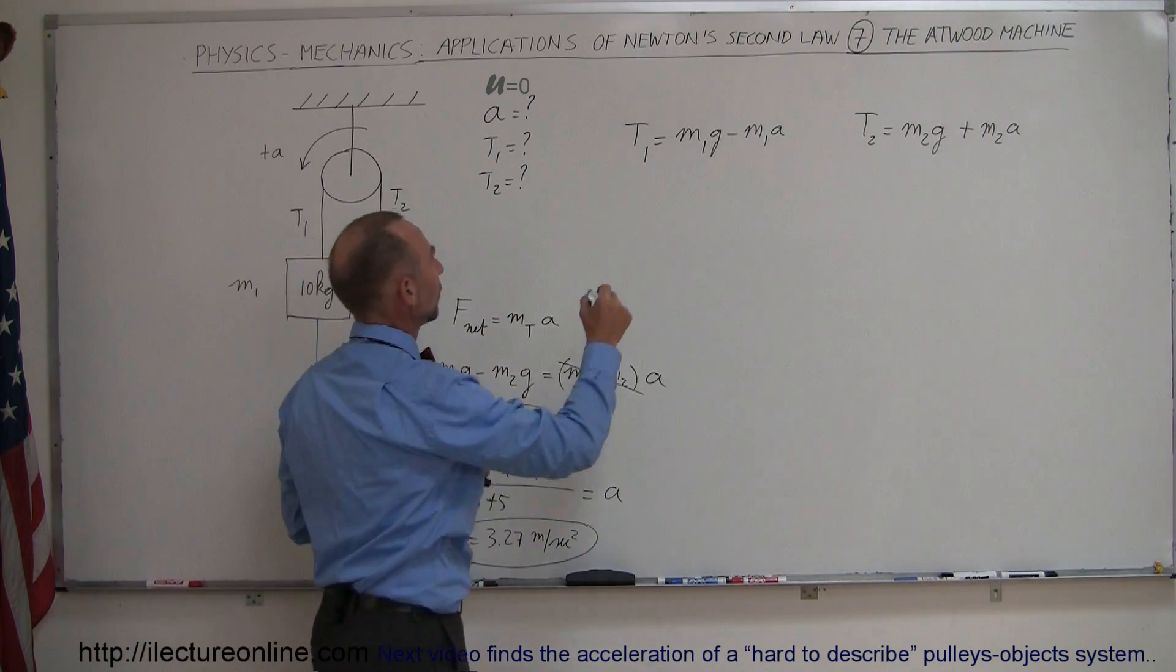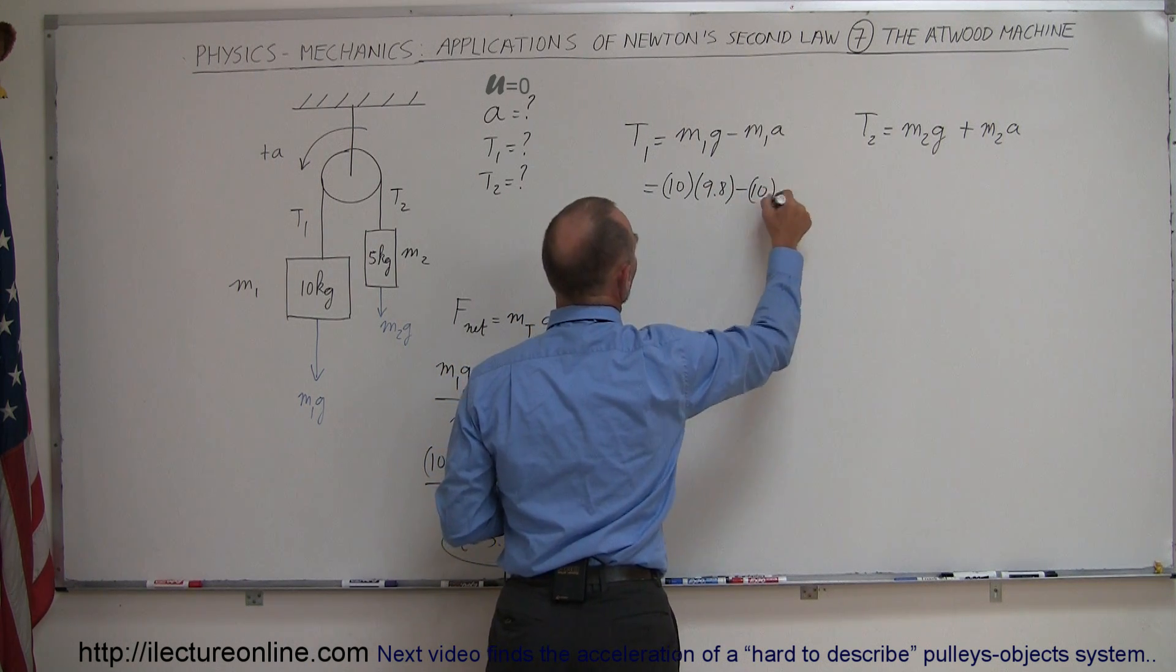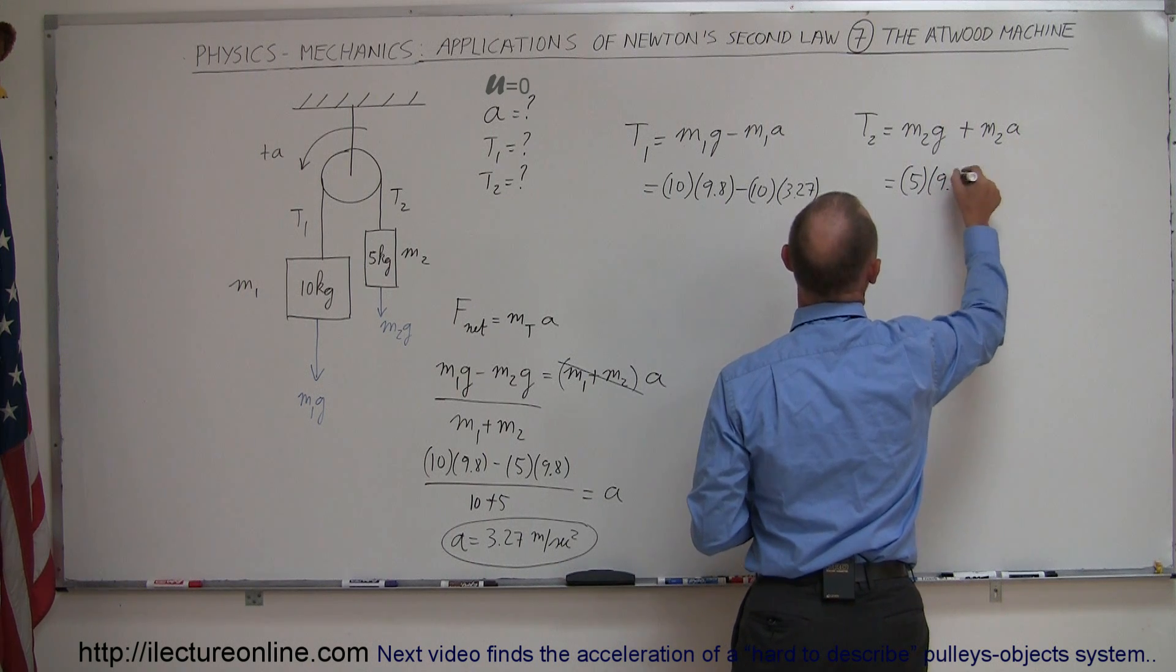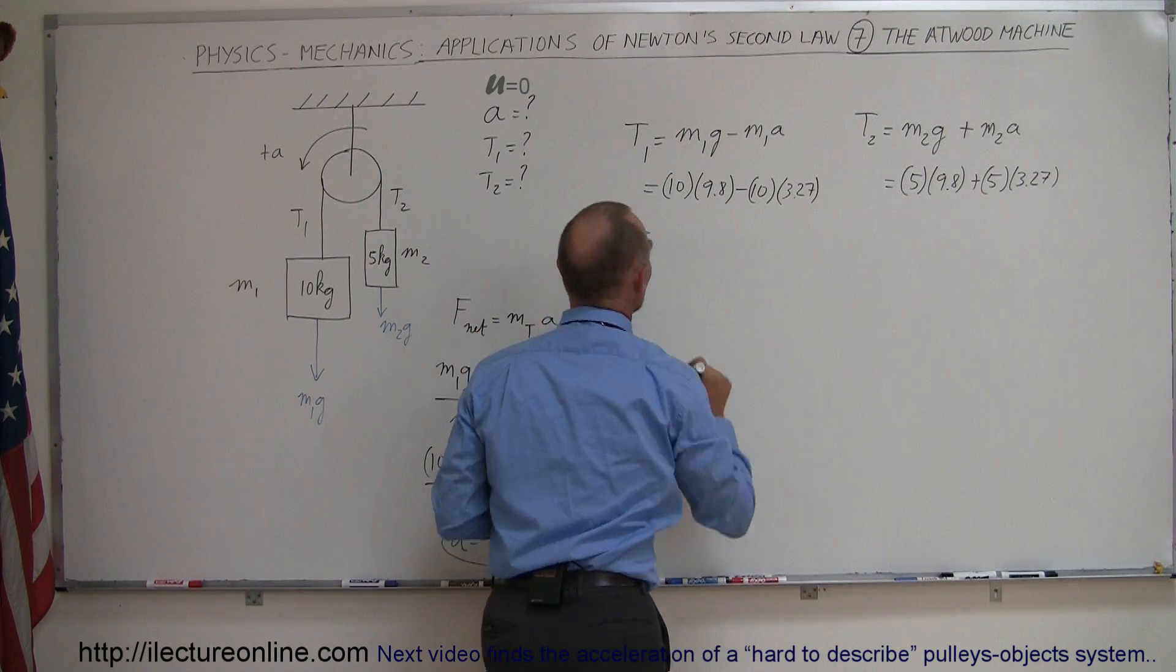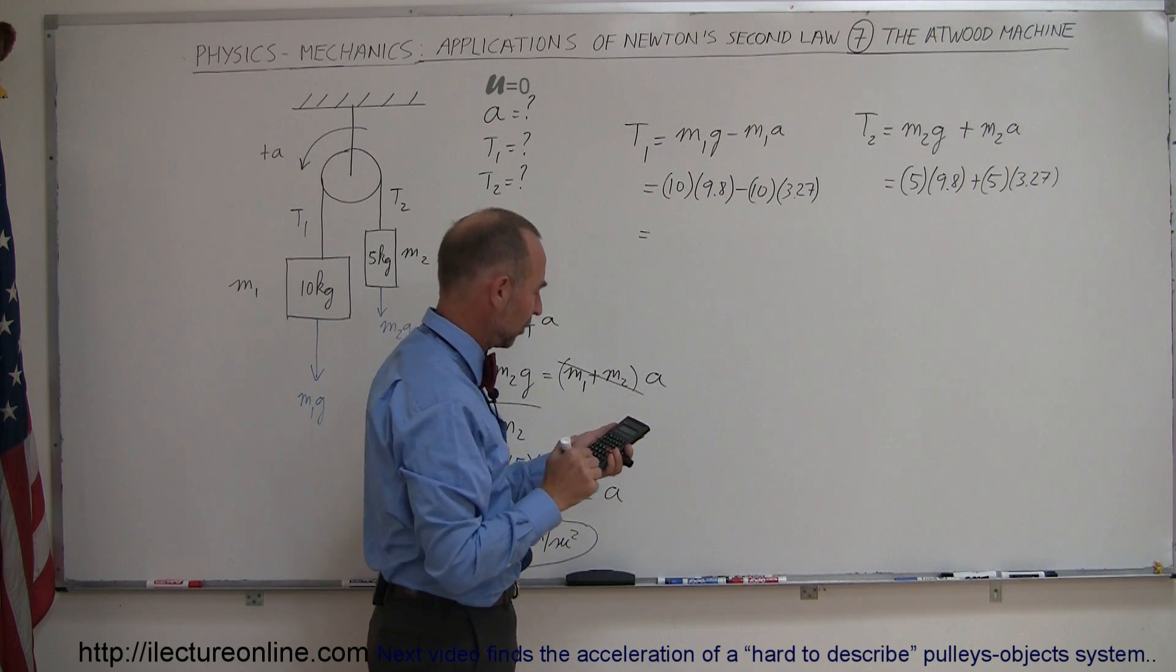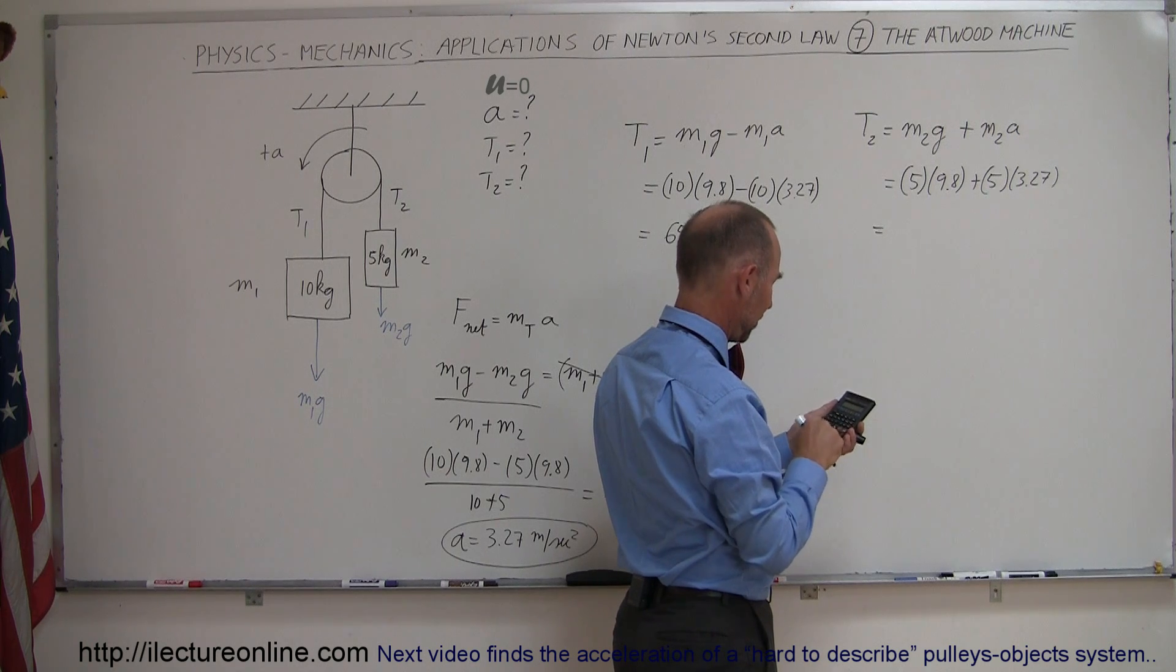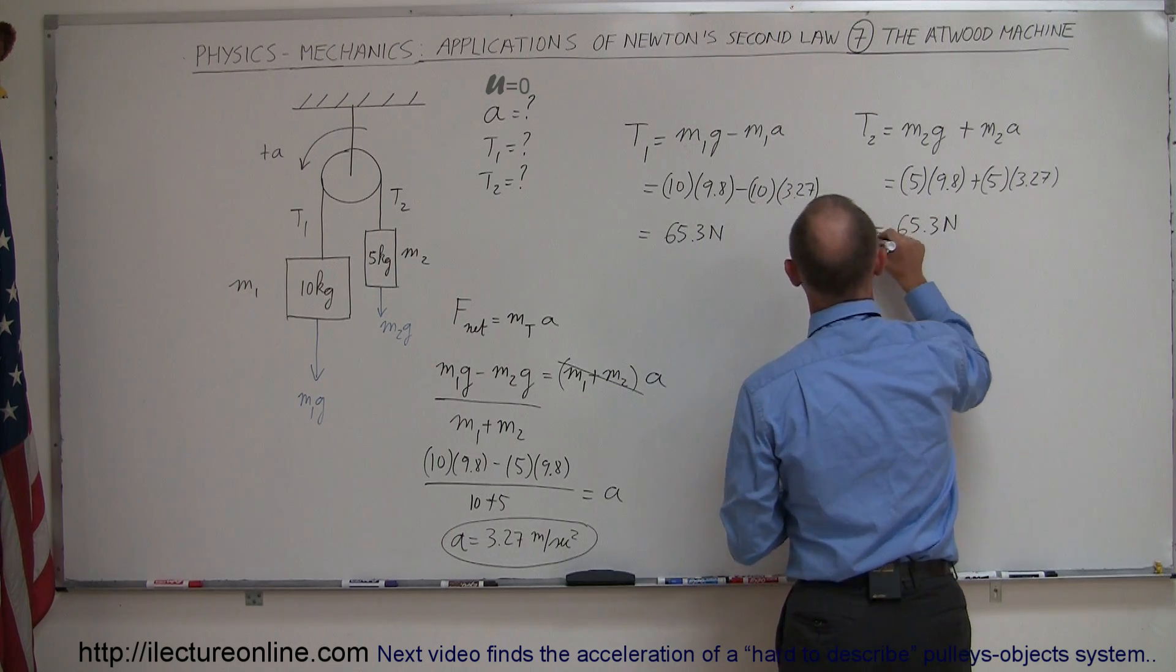So let's plug in the numbers and find out. So this is equal to 10 times 9.8 minus 10 times 3.27 and here tension 2 is going to be 5 times 9.8 plus 5 times 3.27. All right so the tension will be 98 minus 32.7 which will be 65.3 and here that will be 49 plus 5 times 3.27 and we get 65.3 and you can see how nice and easy it is to use that concept to find the tension